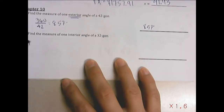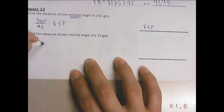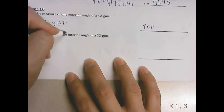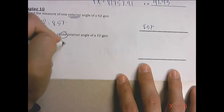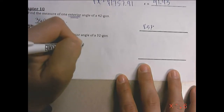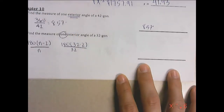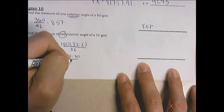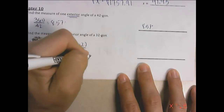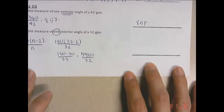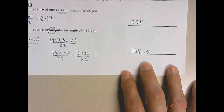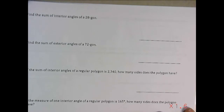Find the measure of one interior angle of a 32-gon. The formula is 180 times (n minus 2) divided by n, the number of sides, because we're finding one interior angle. So we do 180 times (32 minus 2) divided by 32, which gives us 180 times 30 divided by 32 — that's 5400 divided by 32, which gives you 168.75 degrees.